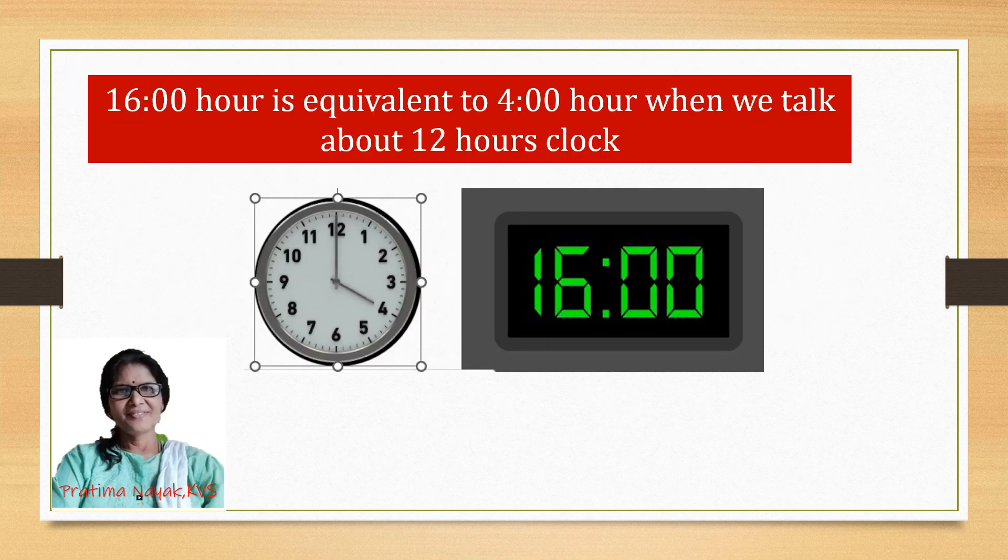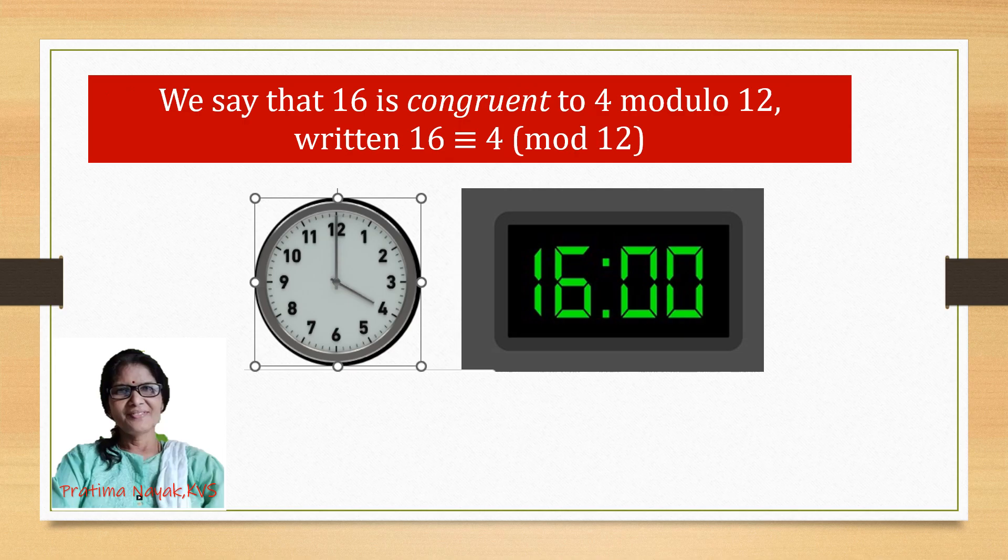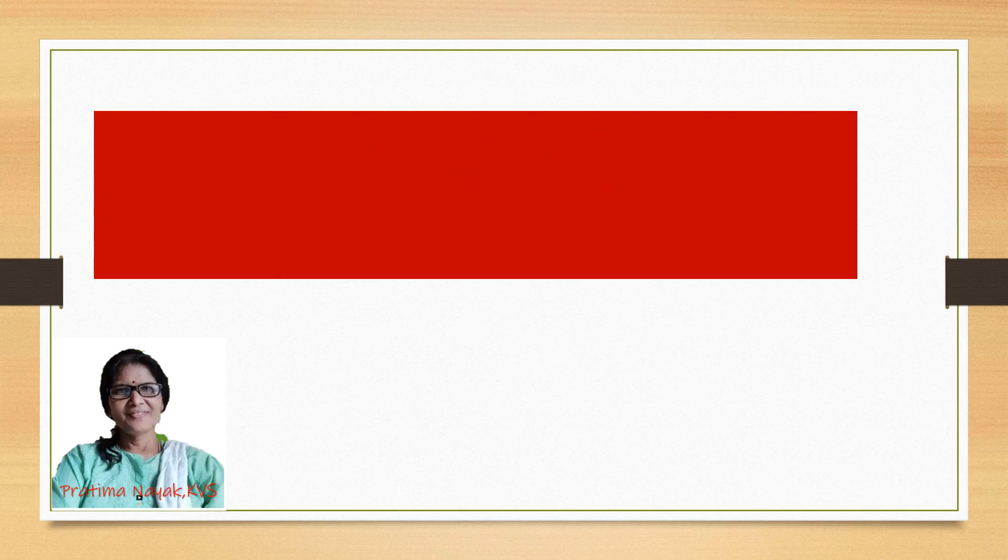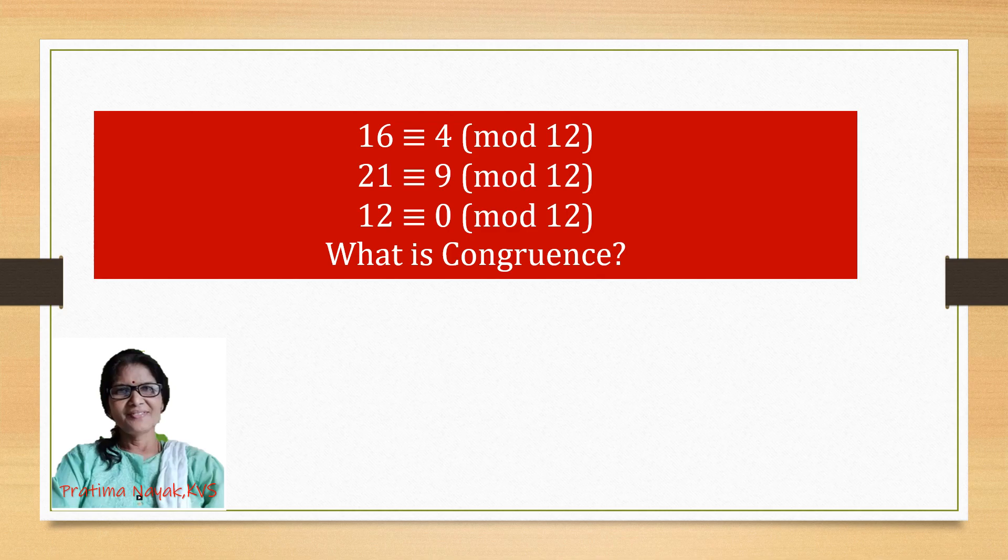So 16 hours is equivalent to 4 hours when we talk about a 12-hour clock. We say that 16 is congruent to 4 modulo 12, written 16 ≡ 4 (mod 12). We read as 16 is congruent to 4 modulo 12. In the same way we can say 21 is congruent to 9 modulo 12.